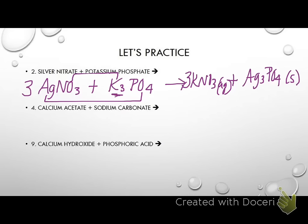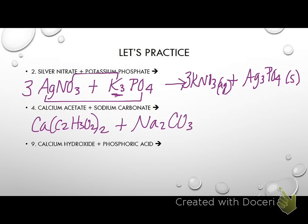This next one is calcium acetate, Ca(C₂H₃O₂)₂, plus sodium carbonate. You might be able to get to the point where, before you even predict, you can look at that sodium is a group one metal — so no matter what you put it with, it's going to be aqueous. Acetate, if you go look at it, is always soluble — so whatever it goes with is going to be aqueous. You can look at this very quickly and say it's going to be a no reaction.